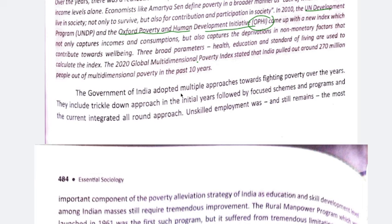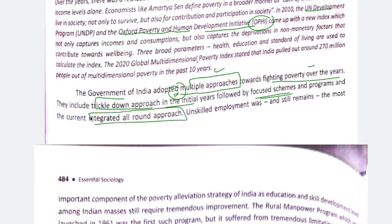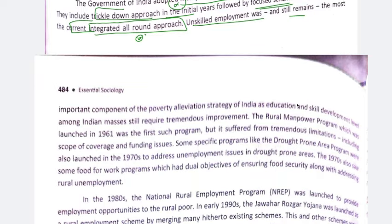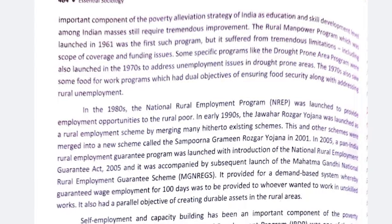The Government of India has adopted many strategies and approaches to fight poverty over the years. Initially, there was the trickle-down approach, which didn't work well. After that came focused schemes, followed by integrated all-round approach schemes currently running. Unskilled employment is a very important component of India's poverty elevation strategy because many people are not skilled and cannot find employment, which remains a significant problem. Education and skill development levels still need improvement.